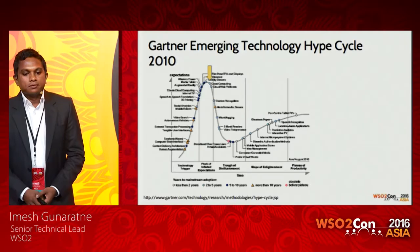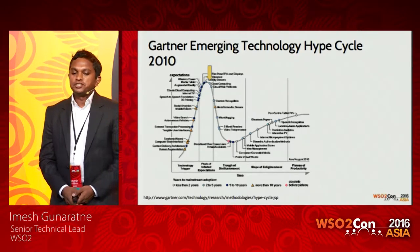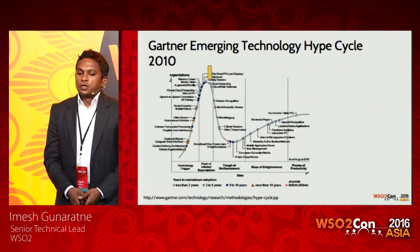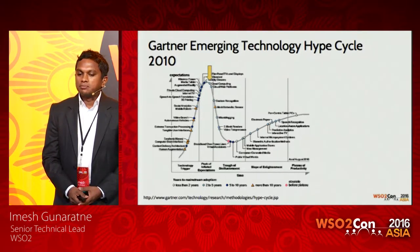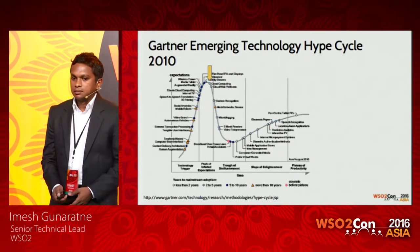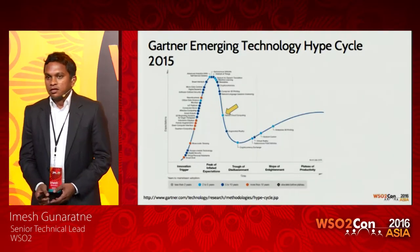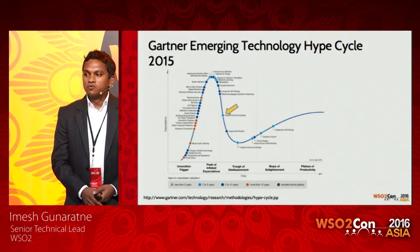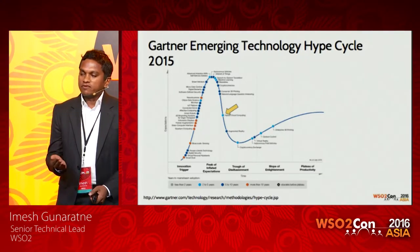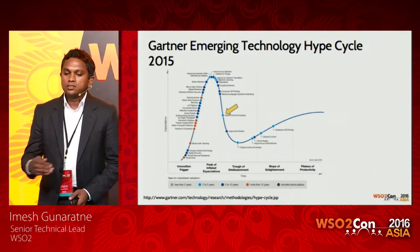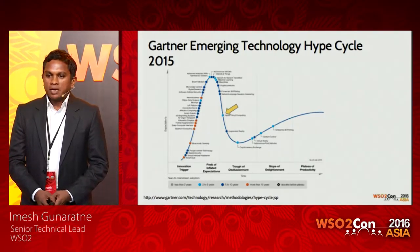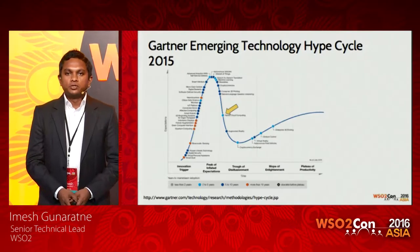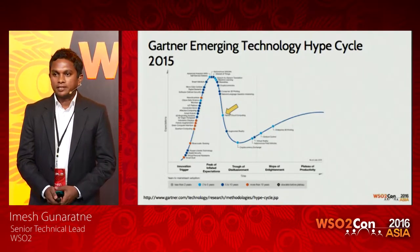In 2010, Gartner mentioned that cloud computing is at its peak, according to their emerging technology hype cycle. After five years, you will see that Cloud computing has moved away from its peak and is now moving towards enlightenment. So maybe within another two to five years, Cloud would be used more widely in most organizations in the industry.